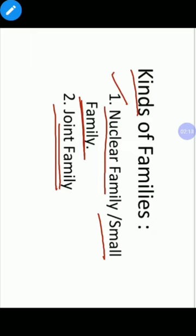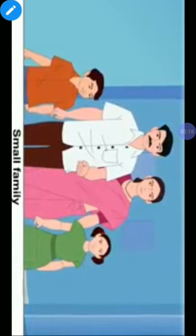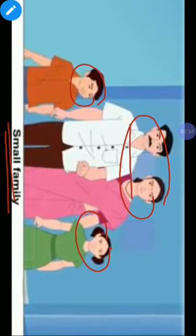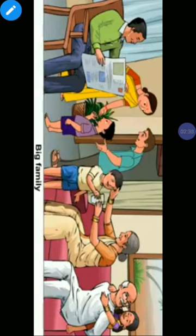So first is nuclear family and second is joint family. Look at this picture — here are parents and children. So this family is a small family. The members are only parents and children. This family is a small family.